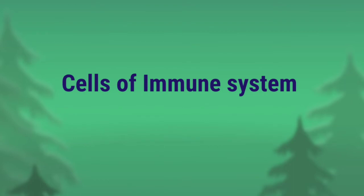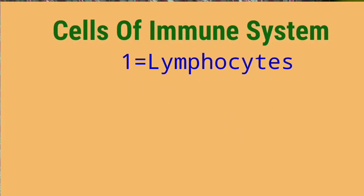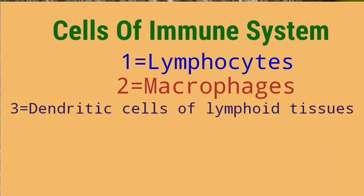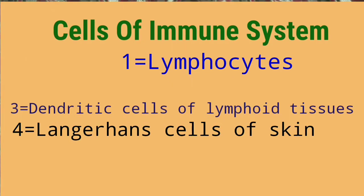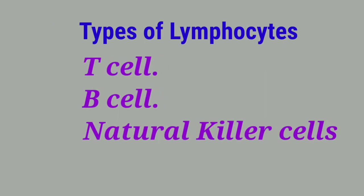In this video we will talk about the cells of the immune system of the body. The cells of the immune system mainly comprise four entities: the lymphocytes, the macrophages, the dendritic cells of the lymphoid tissue, and the Langerhans cells of the skin. Talking about the lymphocytes, there are three sub-classifications: T-cells, B-cells, and natural killer cells. These three are basically identified with the help of surface glycoproteins.